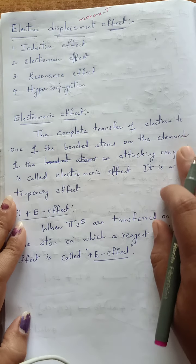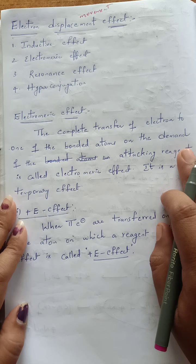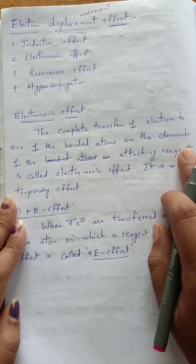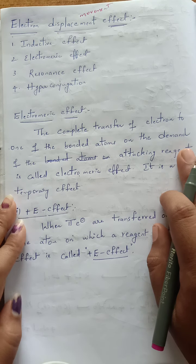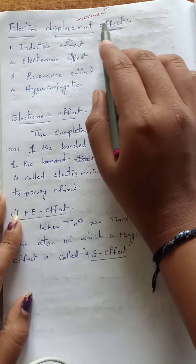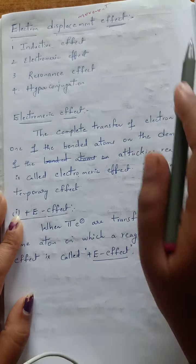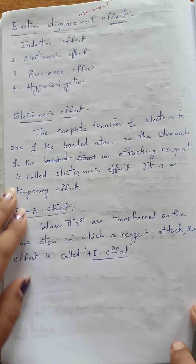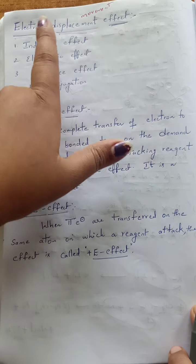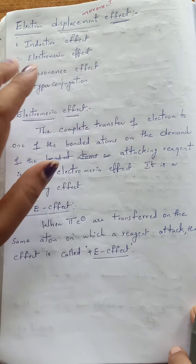You may get a doubt why electrons are moving. Because to participate in a reaction, either breaking of a bond or making of a bond should take place. To make or break a bond, electrons should move from one atom to another. Due to the movement of such electrons, different kinds of effects arise, known as electron displacement effects.